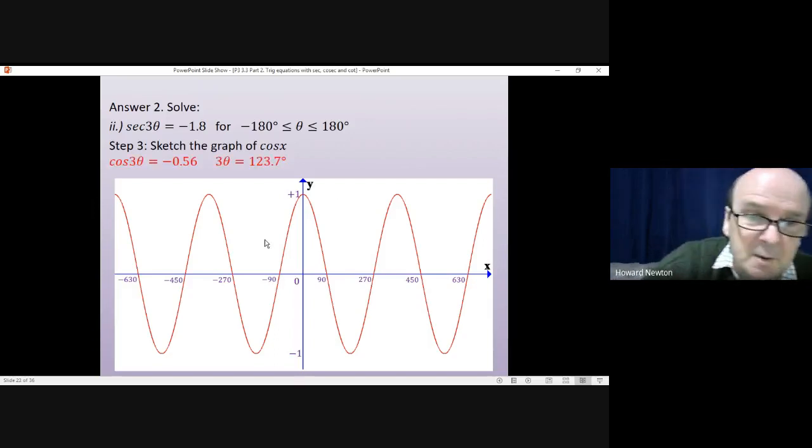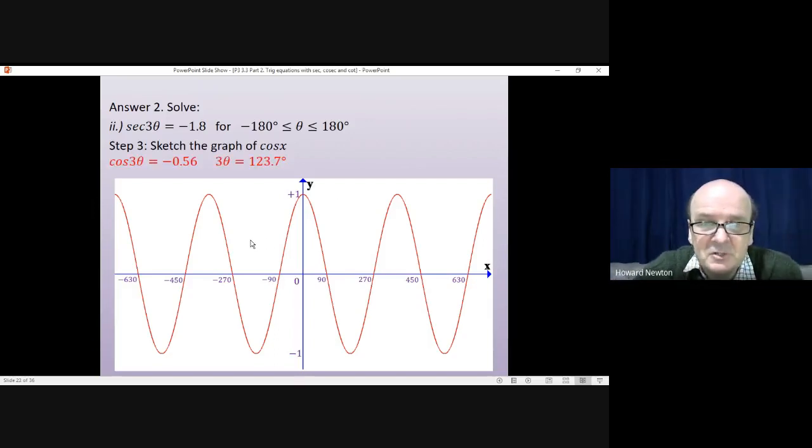That was what we did just now. That was finding the first solution using our calculator. Which was that 3θ could be 123.7 degrees. Well, we draw this on the graph. So at minus 0.56 on the y-axis. And 123.7 degrees on the x-axis. And that'll be that point there.